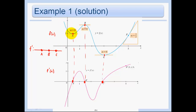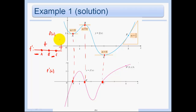We know that the function was decreasing before a, meaning the derivative would have been negative. Then between a and b my function is increasing, meaning my derivative is positive. Between b and c my function is decreasing the whole time, meaning my derivative is negative. And then from c on my function is increasing. So I have a good idea that my graph is going to look like I'm going from negative to positive to negative to positive.